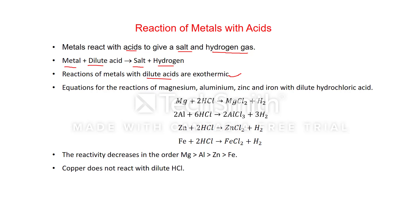See the equations for the reactions of magnesium, aluminium, zinc, and iron with dilute hydrochloric acid. The products are magnesium chloride, aluminium chloride, zinc chloride, and iron(II) chloride (FeCl₂), along with hydrogen gas in each case.